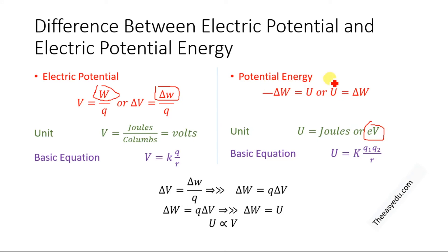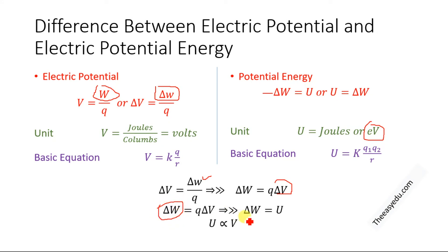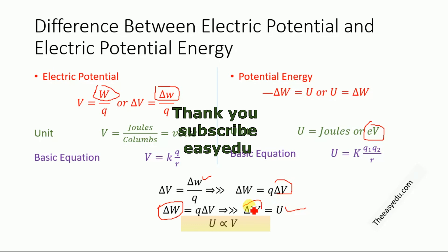The relation between electric potential and electrical potential energy is: ΔV, the electric potential, equals ΔW divided by q, where ΔW is the change in work and q is the charge. Multiplying both sides by q, we get ΔW = q × ΔV, which is the potential difference. So ΔW, which is the potential energy U, is directly proportional to the potential difference. That's it — thank you for watching, and don't forget to subscribe, like, and share.